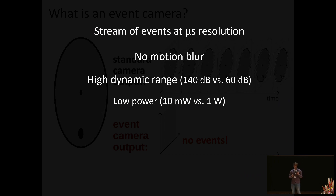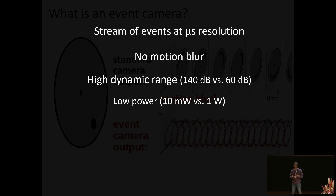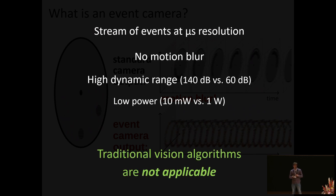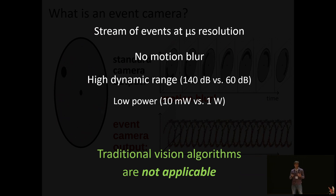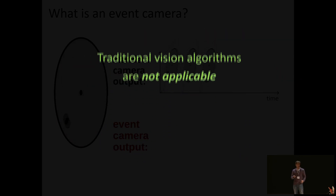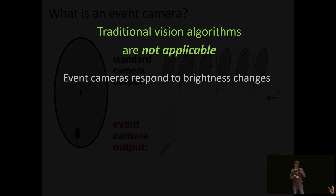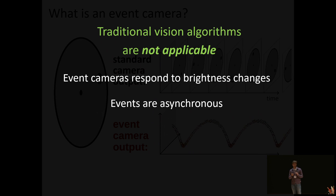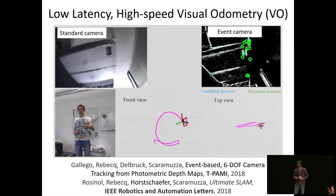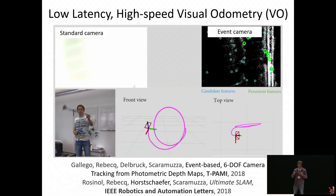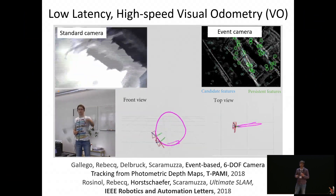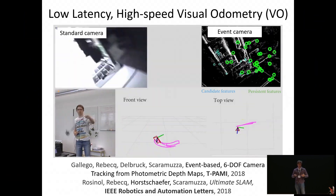Event cameras also have relatively low power consumption — 100 times less than standard cameras. However, due to the different nature of events, we cannot use traditional vision algorithms anymore. This is because of two challenges: event cameras respond to brightness changes, and the events are triggered asynchronously. Nonetheless, the outstanding properties of event cameras have been used to achieve low-latency, high-speed visual odometry.